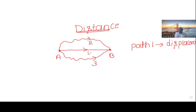Path 1, path 2, path 3, anyone can be a distance. One more important difference between distance and displacement: distance, once it travelled, never be zero.